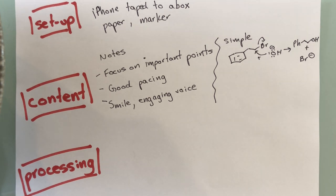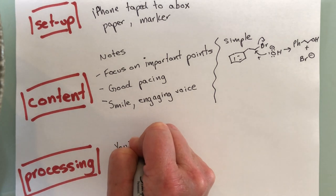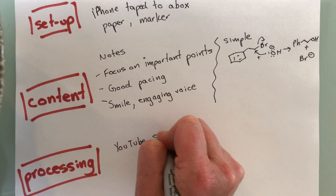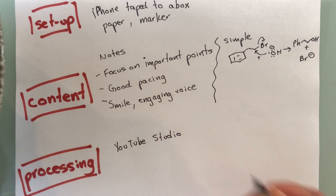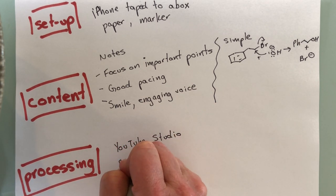Now when it gets to the processing I'm going to use all free tools that we have. So I'm going to be using YouTube Studio. That's a simple editor that I can use just to cut things out if I want to. Nice and easy to use. There's tutorials available and then I'm going to post it for the students in Brightspace.